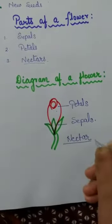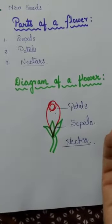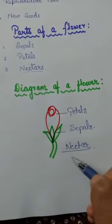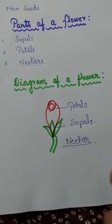Nectar is basically a scented liquid present in a flower. It attracts insects.